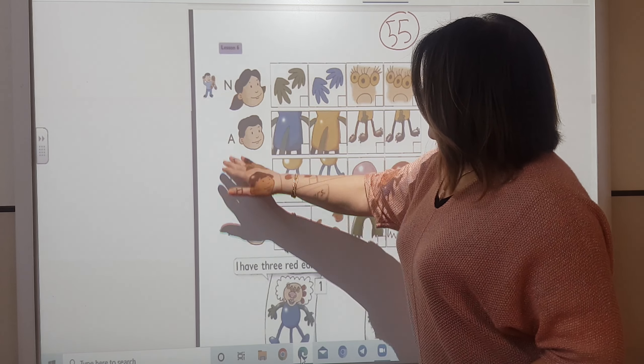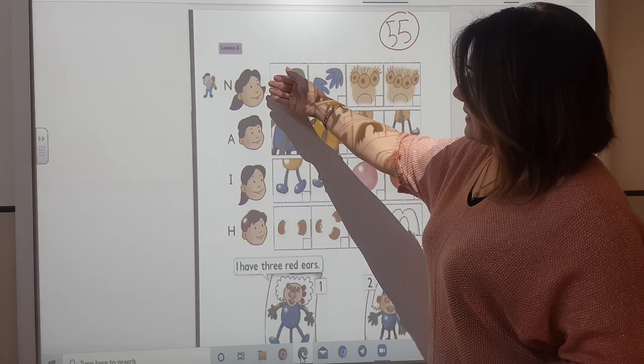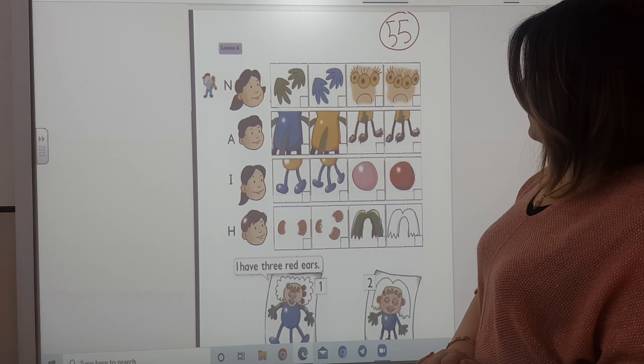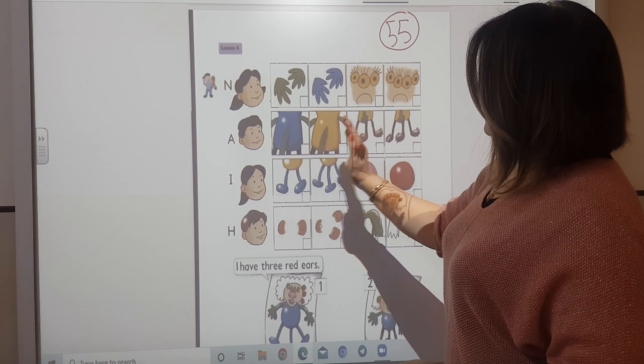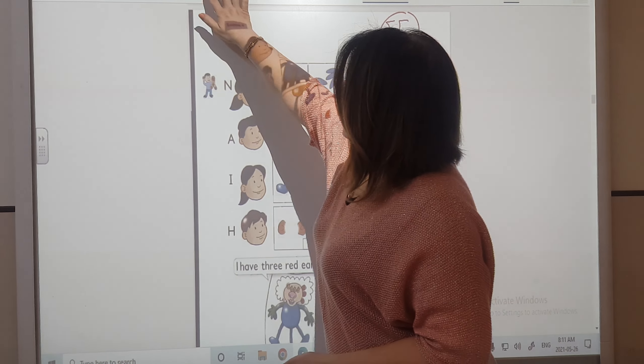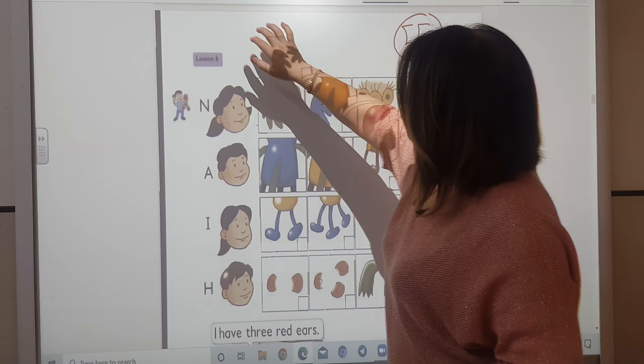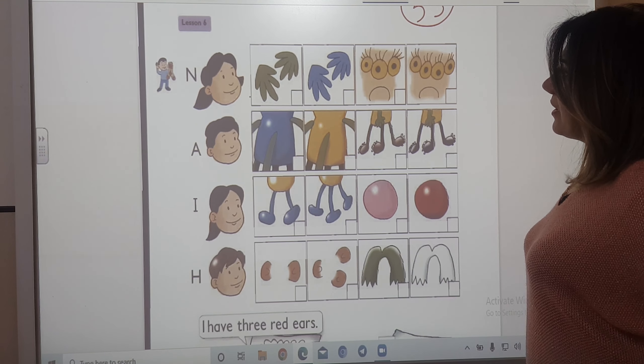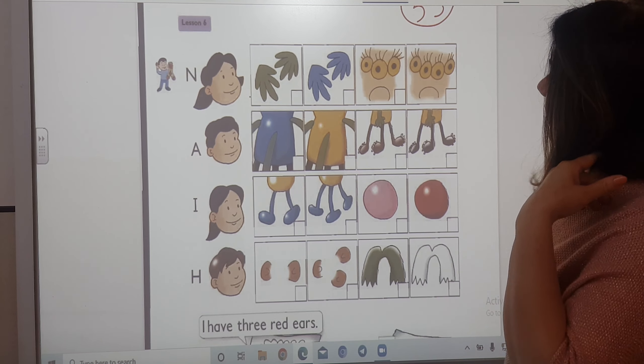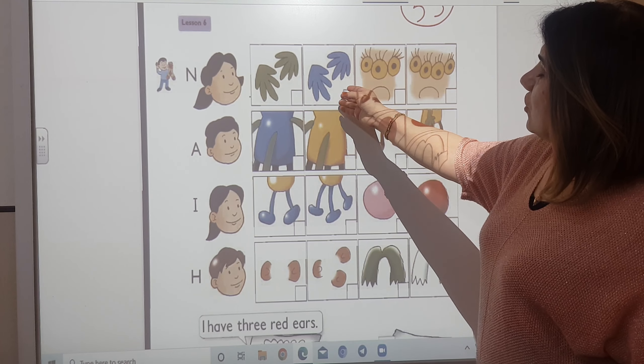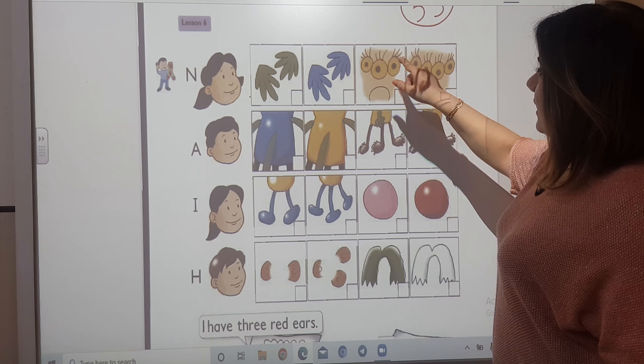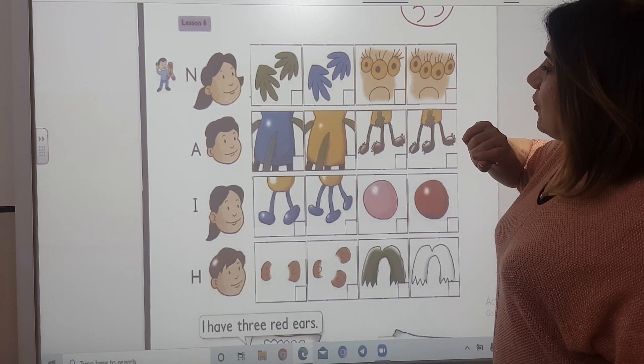Who can you see here in this picture? Yes, I can see Neda, Ahmed, Iman and Hani. And look at these boxes. Here we have parts of the bodies. Parts of the body. Okay, here we have two hands, two green hands, two blue hands, three yellow eyes, four yellow eyes.